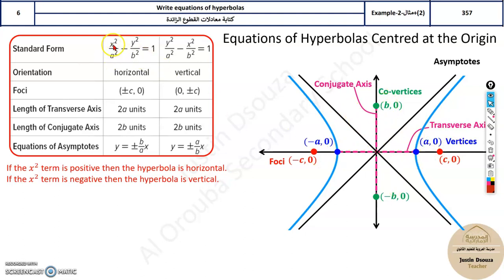So x² by a²—the positive term will have the bigger value. Also remember, in the ellipse, a was the biggest, the major axis, the biggest length. But here, the foci value is the biggest.